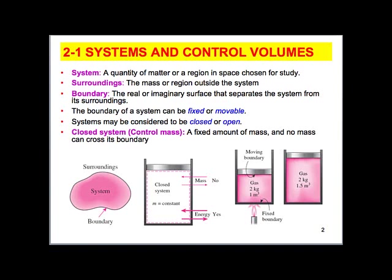When we talk about a system we're talking about anything we want it to be. The way that we designate where the system is, we draw a boundary. That boundary is wherever we say that boundary is. The surroundings are everything outside the boundary, the system is everything inside the boundary.